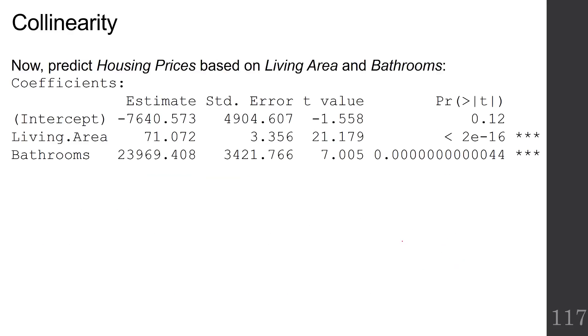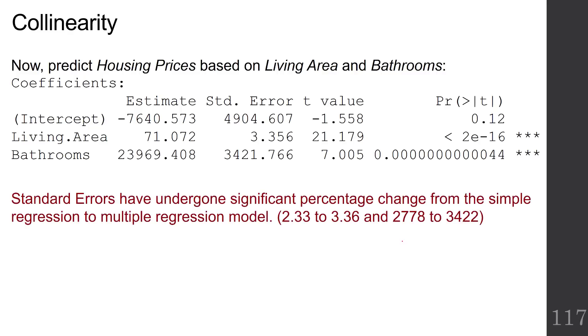When we look at the house price regressed on both at the same time, living area and bathrooms, we still have positive coefficients. But notice that the standard errors have undergone significant percentage change from the simple regression to the multiple regression. The standard error for living area went from 2.33 to 3.36. And the standard error for bathrooms went from 2778 to 3422. So those standard errors increased. It turns out these two predictors are correlated. The correlation is positive .73 between living area and bathrooms.